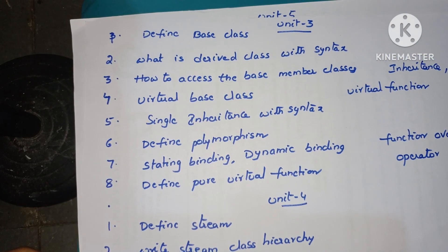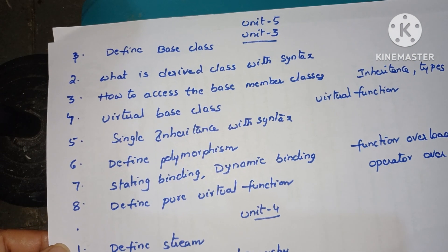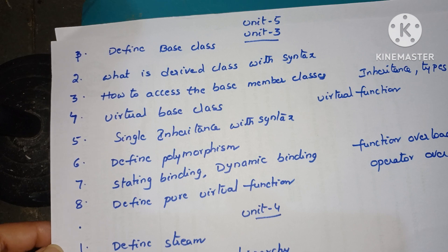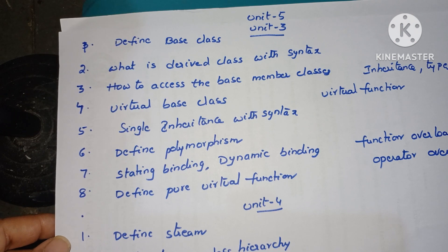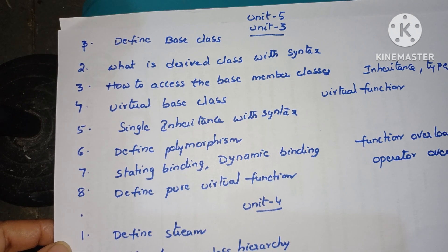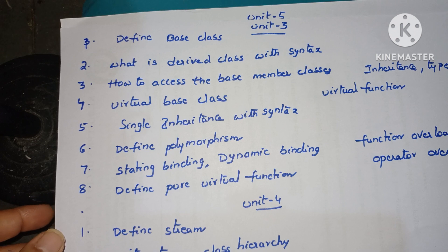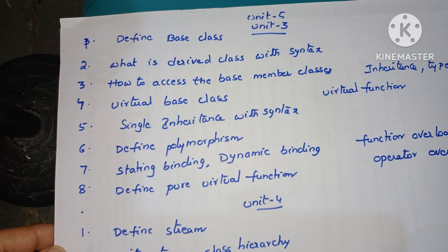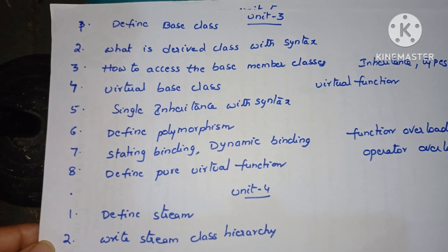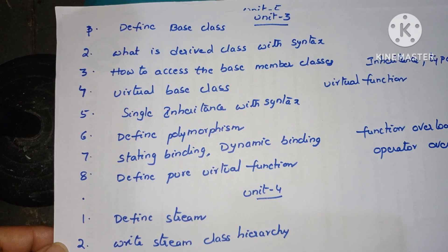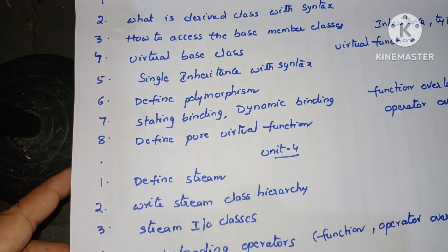Next, Unit 3 important questions are on the inheritance concept. What is inheritance and types of inheritance? Define base class. What is derived class with syntax? How to access the base member classes, and which operator is required for accessing data from the inherited base member classes? Explain about virtual base class. What is single inheritance? Explain with syntax — similarly all inheritances: multiple, hierarchical, everything. Define polymorphism, different types of polymorphism — function overloading, operator overloading, everything. Define static binding and dynamic binding. Define pure virtual functions and what is virtual function? These are the Unit 3 questions.